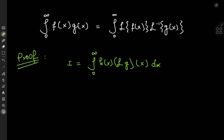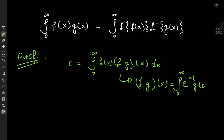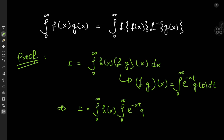Now what to do with this integral? Well, it starts off by expanding the Laplace transform of g. The Laplace transform of g treated as a function of x means we have the integral from 0 to infinity of e^(-xt) g(t) dt. Using this relation, we have the integral from 0 to infinity of h(x) times the integral from 0 to infinity of e^(-xt) g(t) dt, with the outer integration with respect to x.